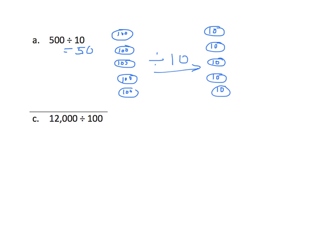The next problem is a little bit more complicated, but not so bad. In this case, we have 12,000. And that means I have one 10,000, and I have two one-thousands.